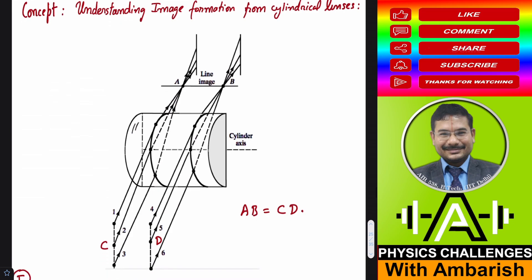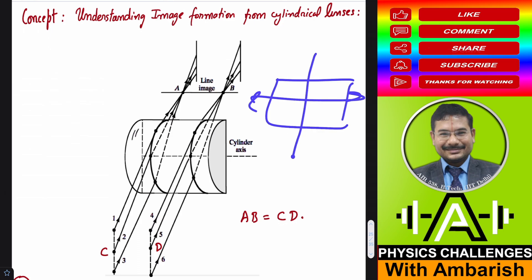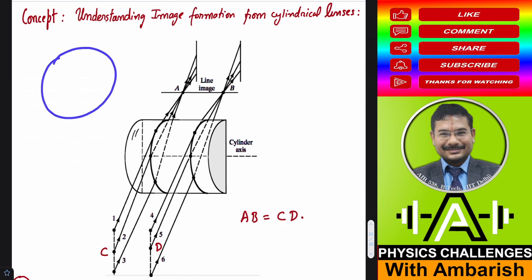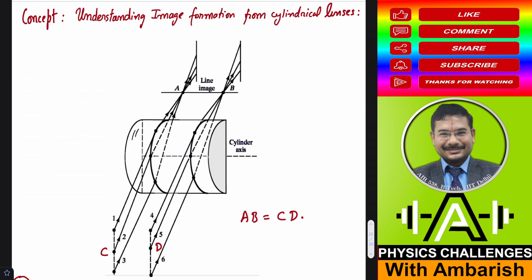The first concept we need to understand is image formation from cylindrical lenses. A cylinder is somewhere between a glass slab and a sphere. A glass slab has infinite radius of curvature in both directions. If it's a sphere, it has a finite radius in both directions. Whereas for a cylinder, in one direction the radius of curvature is infinity, while in the other direction it has a finite radius of curvature, just like a sphere.